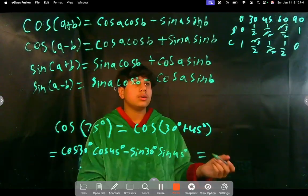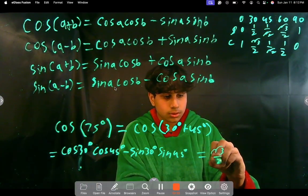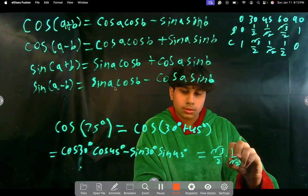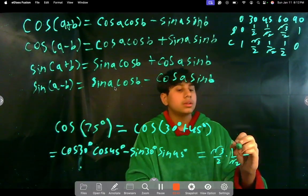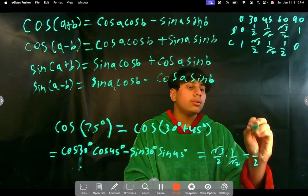So, now we're just inputting our values, right? Cosine of 30 is root 3 over 2, times cosine of 45 is 1 over root 2, minus sine of 30 is 1 half, and then sine of 45 is 1 over root 2.